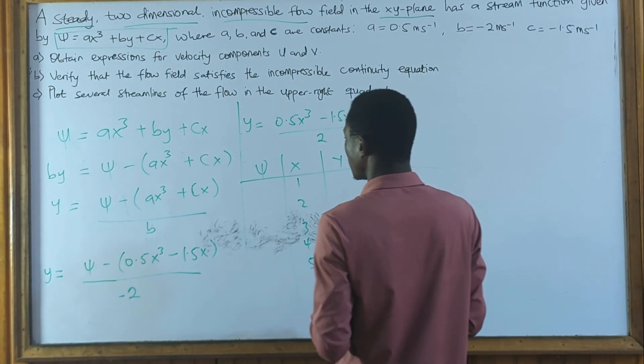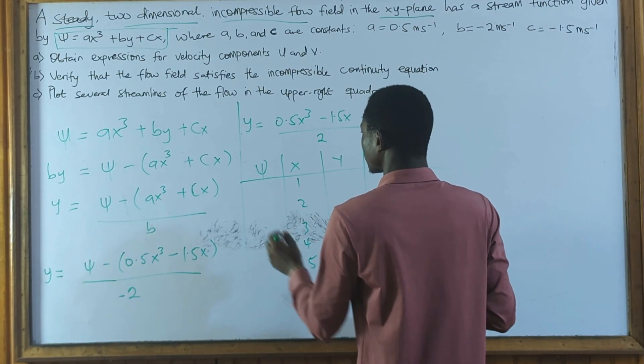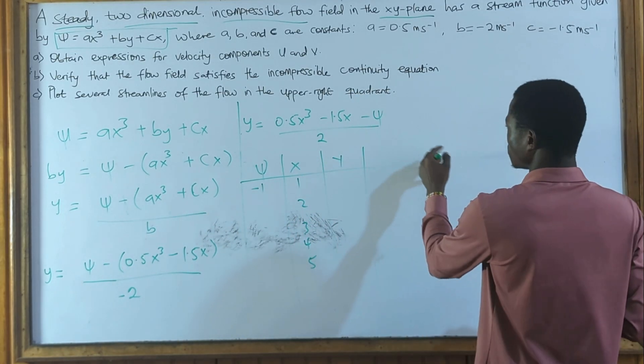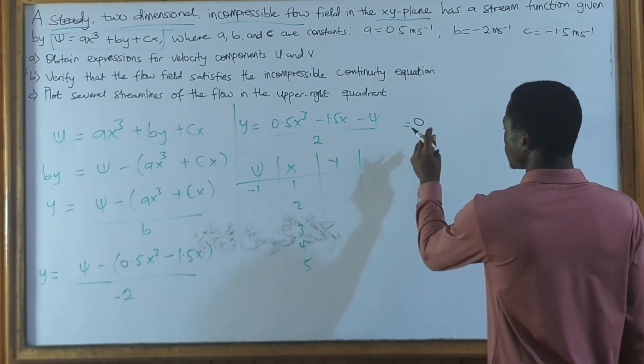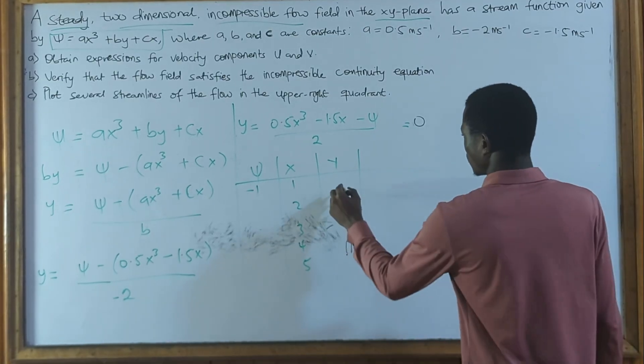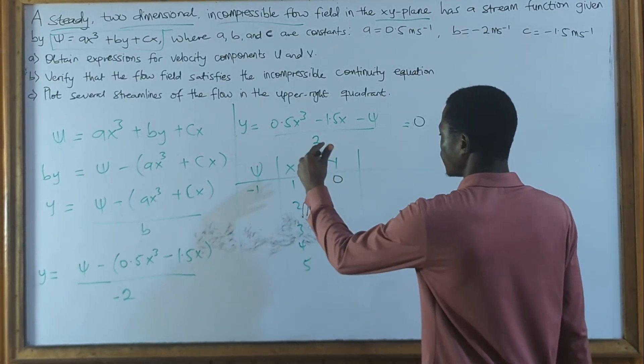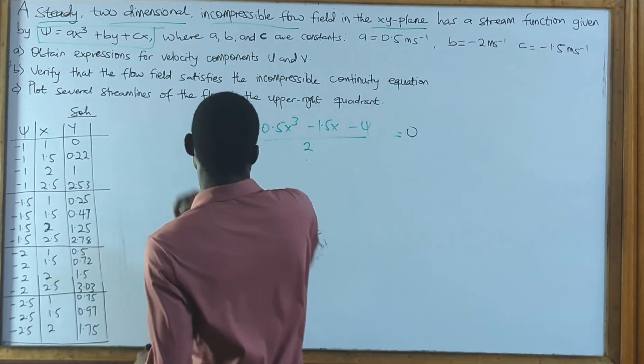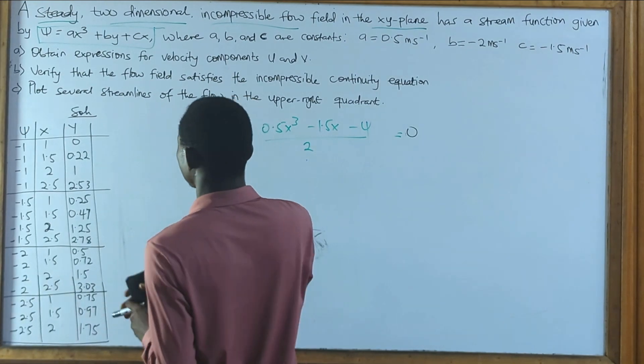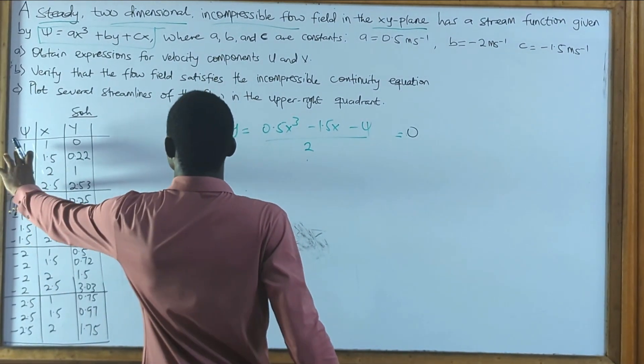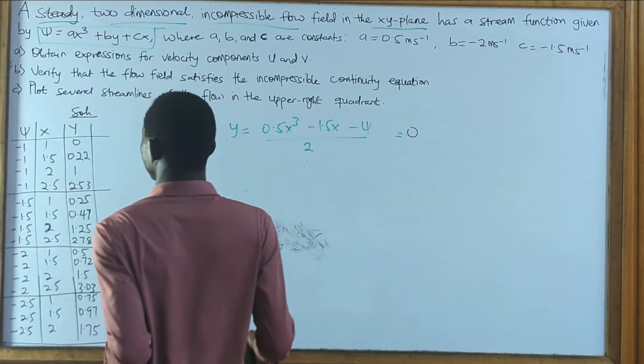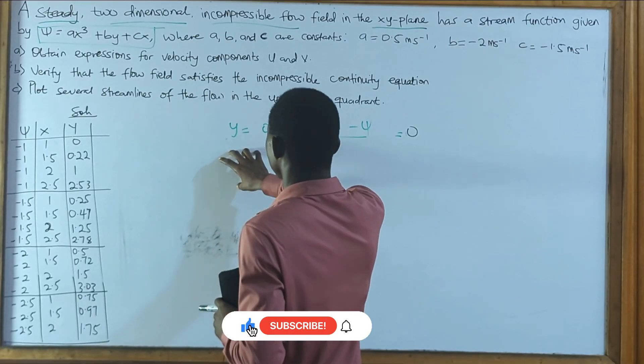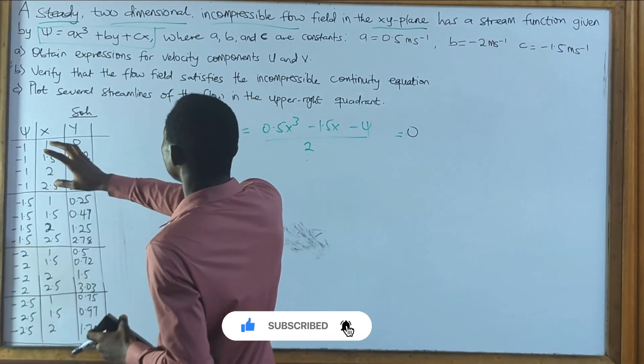And let's say we take our ψ to be -1. So if we try to do this computation, I'm going to get our y to be equal to 0. So you do that for all. So these are my values for the plots. And this is how I got them.